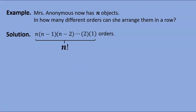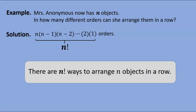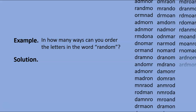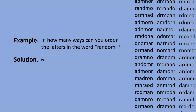Looking back at our problem: Mrs. Anonymous has n objects, and as we've seen, she can arrange them in n factorial ways. There are n factorial ways to arrange n objects in a row. For example, in how many ways can you order the letters in the word 'random'? Random is made up of 6 distinct letters, so there are 6! ways. Your scientific calculator has a factorial button — enter 6! and it will tell you that 6! = 720. So there are 720 ways to order the letters in the word random.